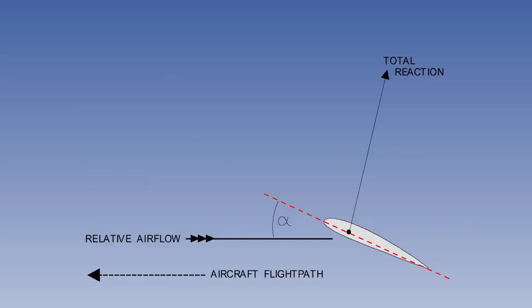Drag is the force which resists the forward motion of the aircraft. It acts parallel and in the same direction as the relative airflow, that is, in the opposite direction to the flight path.